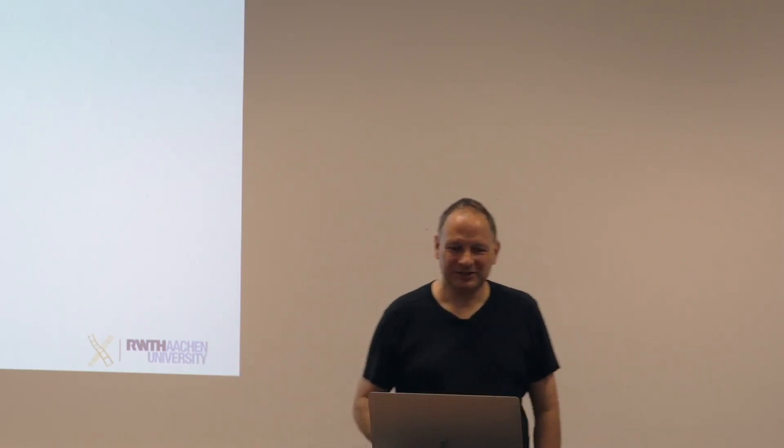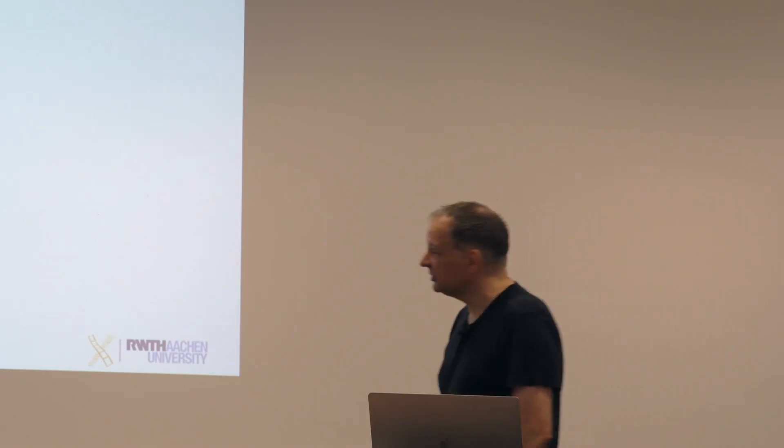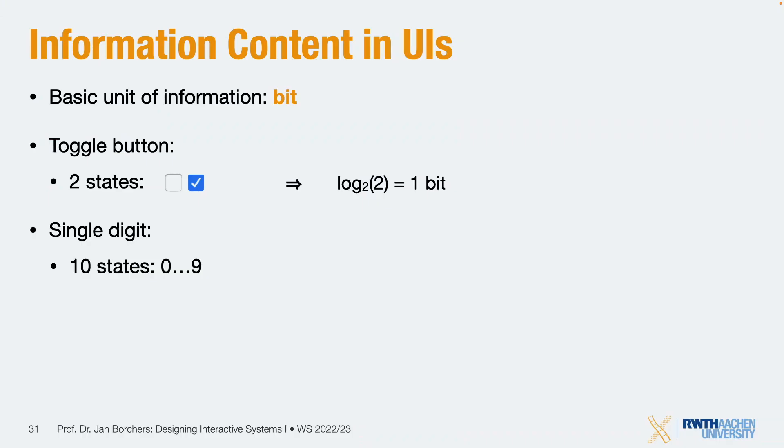For discrete states you count them and apply log₂. It gets trickier with analog scales — theoretically infinite states. But we need to consider human performance: how much information can a person draw from an unmarked analog scale? Experiments show: two positions, easy — at least one bit. Four equidistant positions — two bits, no problem. Around three bits, eight different positions — that's where performance maxes out. With more than eight positions on an unmarked scale, performance drops off. So an unmarked analog scale passes roughly three bits of information to a human.